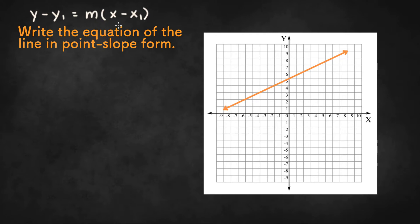And we need to know two things to write the equation in point-slope form. We need to know the slope or m, and we need to know a coordinate or a point on the line, x1 y1.